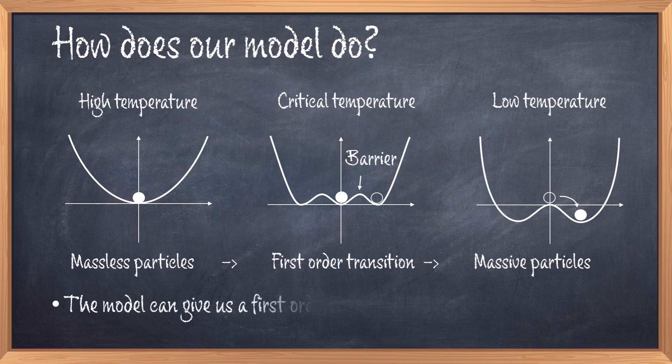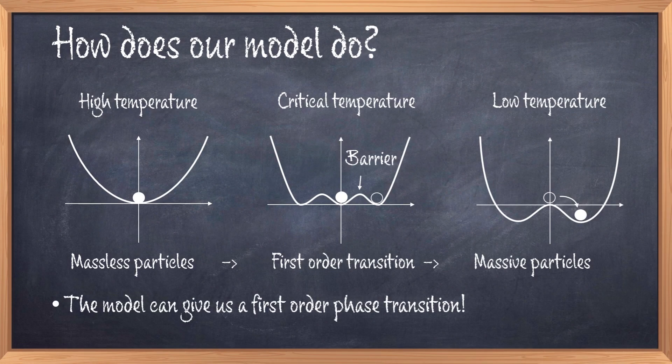Recall that in the standard model we saw a flat path for the Higgs field to transition from the origin to the new minimum away from the origin. In the case of this new model, we have a potential barrier between the two minima. This is the key that gives us a first order phase transition. This means that the Higgs field will be stuck for some time in this false vacuum, which is the minimum at the origin. This allows for out of equilibrium interactions and the model extension can possibly improve on baryogenesis compared to the pure standard model theory. As the temperature gets colder the barrier decreases and eventually disappears, and the Higgs field drops into the true minimum. At this point we have the symmetry breaking just like in the standard model.